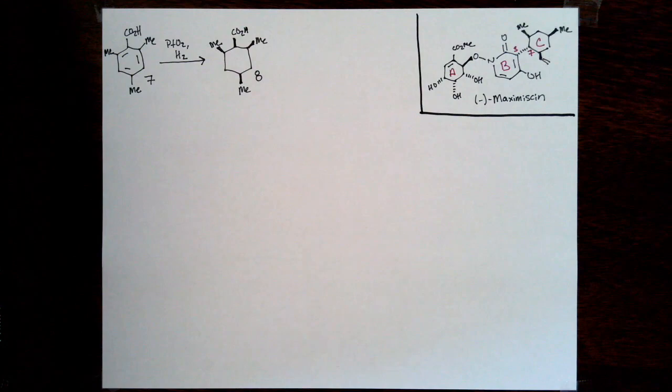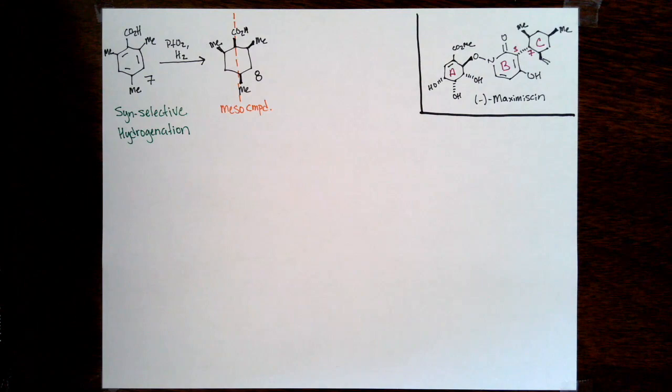Adam's catalyst is just a platinum catalyst with hydrogen to get to the corresponding cyclohexane. Note here that this is a diastereoselective reaction, not an enantioselective reaction. They're going to set their stereocenters later in the route. Adam's catalyst is platinum(IV) oxide as a hydrate, but that's not the active catalyst.